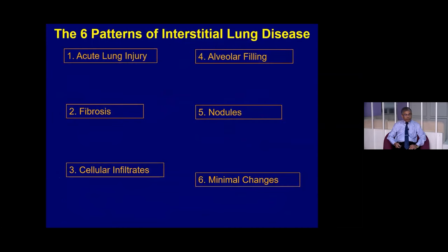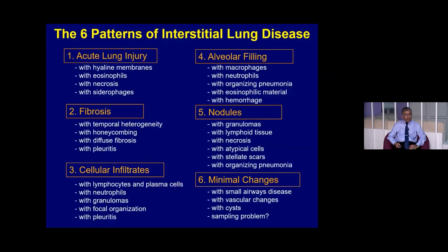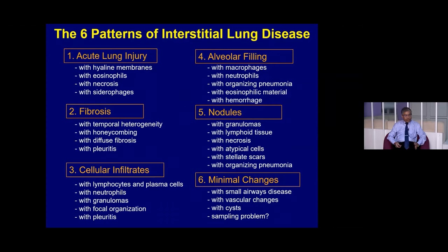This group of disorders produces many pathological consequences, including acute lung injury, fibrosis, cellular infiltrate, alveolar filling, nodules, granulomas, or minimal change. These pathological changes arise from many different etiological causes with different pathological hallmarks. There are six types of pathological consequences, and over the years, there has been an evolution of classification — from LIBO in 1969, to Katzenstein in 1993, and the international ERS/ATS consensus in 2002.